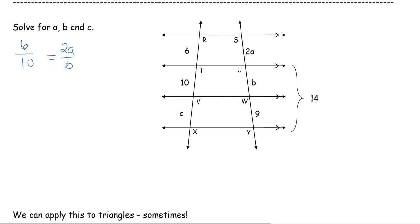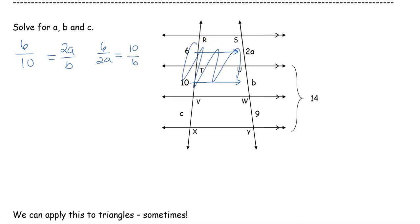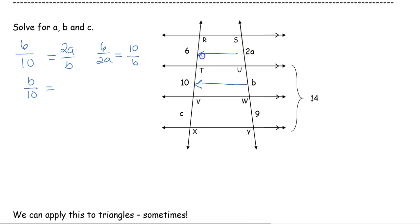That's not the only pattern I could have made. Maybe I went across — I could go 6 over 2a. If I go left to right on top, then I have to go left to right on the bottom. Instead of going left to right, maybe I wanted to go right to left, bottom to top — so if I go from b to 10, then I've got to go 2a to 6. It's just about following a consistent pattern; you just don't want to go diagonally.